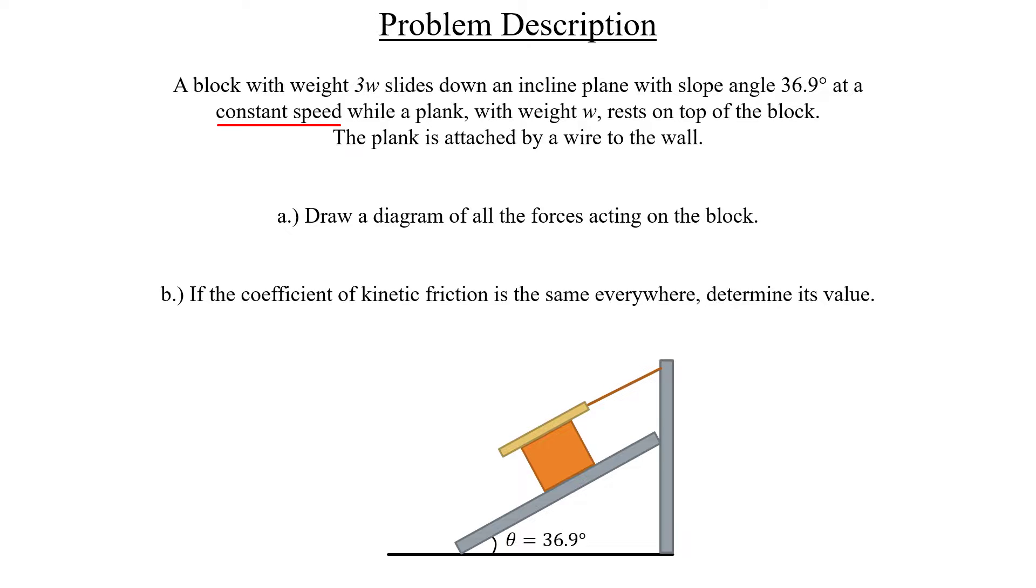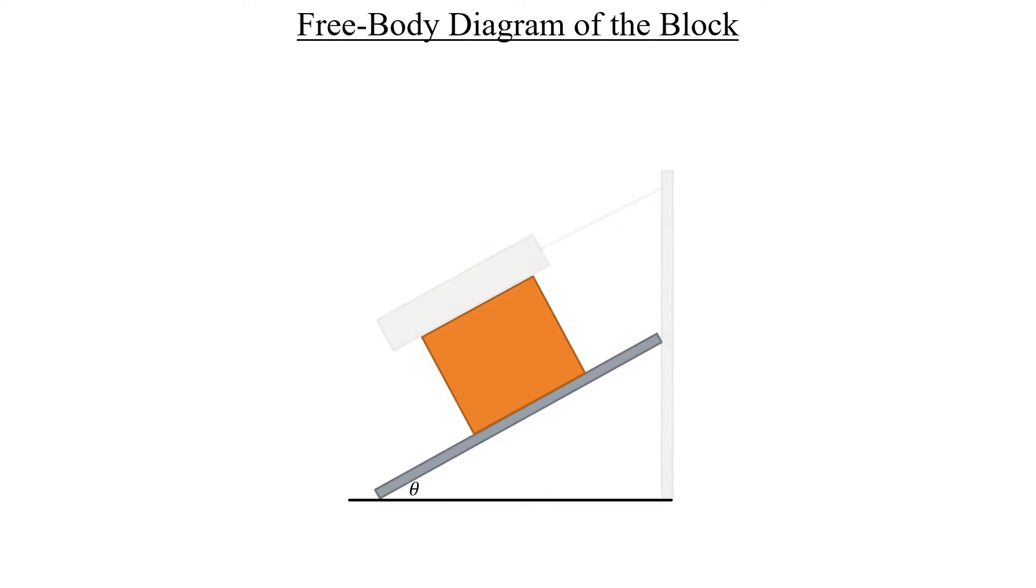Let's start things off with Part A, the free body diagram of the block. So, as we've done quite a few times now, our first step is to include a coordinate system somewhere in our work. It doesn't really matter where. Here, I'm going to put it off to the side so we have more room to draw stuff on the slide here. I've drawn the x-axis at an angle, as you can see here, which represents movement along the surface of the inclined plane.